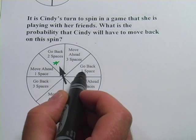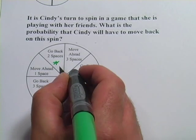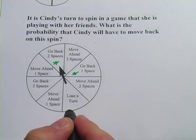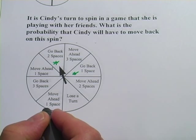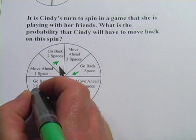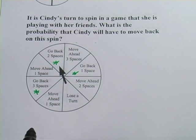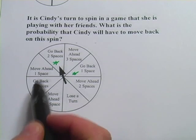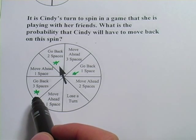This one says, move ahead three spaces. This one says, go back one space. I'm going to mark that too, because that's a go back. This one says, move ahead two spaces. This one says, lose a turn. Move ahead one space. Go back three spaces. So that's a go back one. And then move ahead one space. So I've got three possible outcomes here, which would cause her to go back.